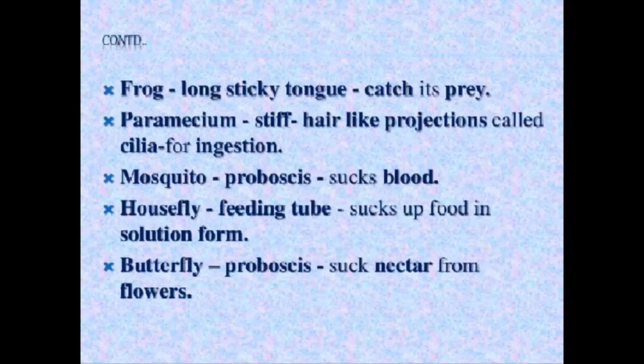Frog — as you may have seen, a frog has a long sticky tongue which catches its prey. Paramecium has stiff hair-like projections called cilia, through which it takes in food. Mosquitoes have a proboscis — meaning they suck blood.